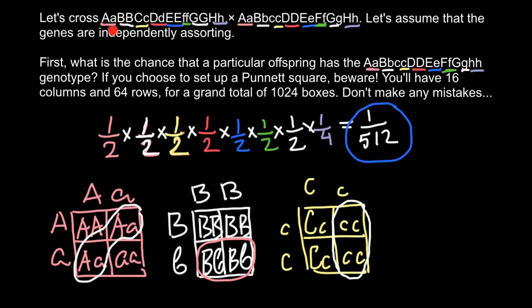It's worth noting that we were lucky today because almost all the probabilities were one half. For example, if parent one and parent two were both heterozygous and we wanted homozygous dominant progeny for gene A, we would put one quarter instead. For different target genotypes in the progeny, we may get different probability fractions. Hopefully now you can solve such problems within minutes — and you may see a similar problem on your exam.